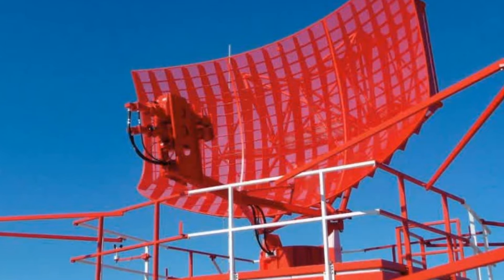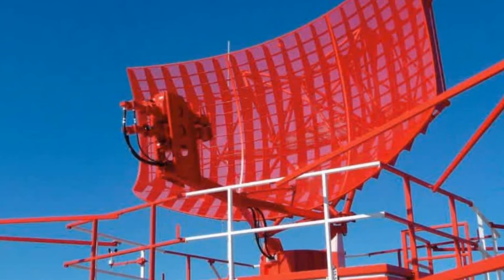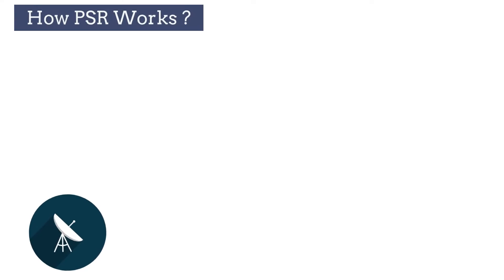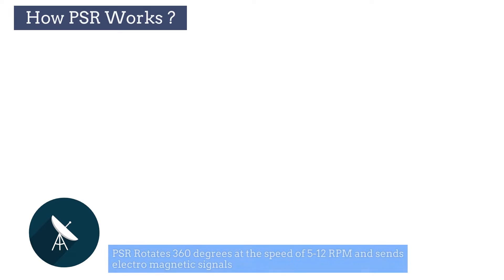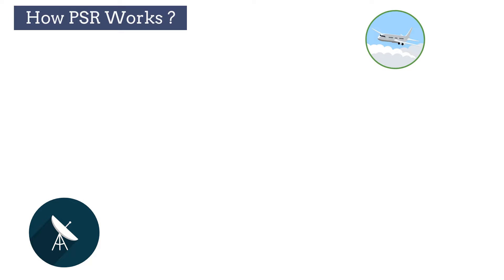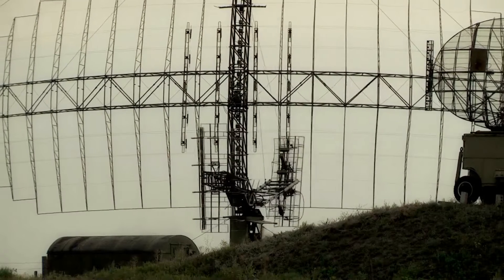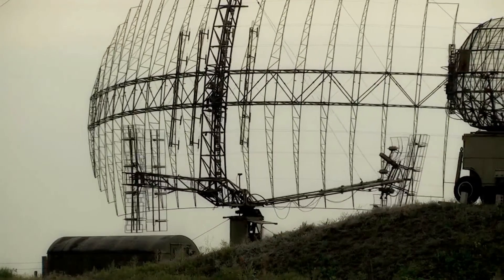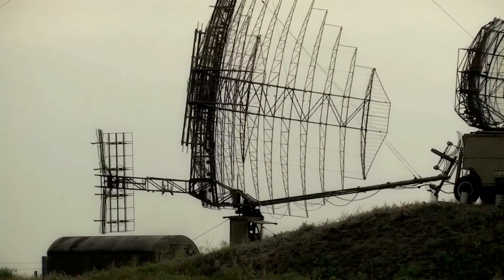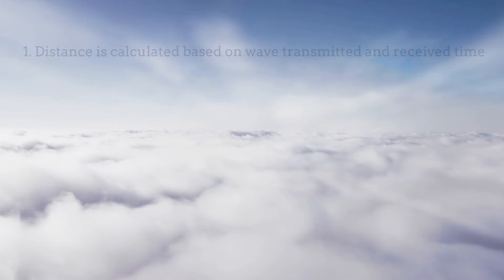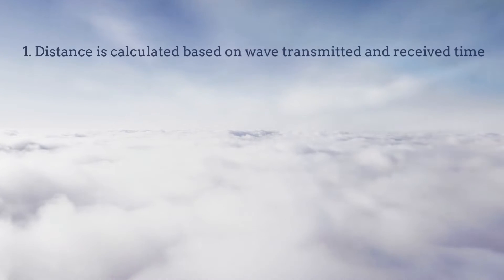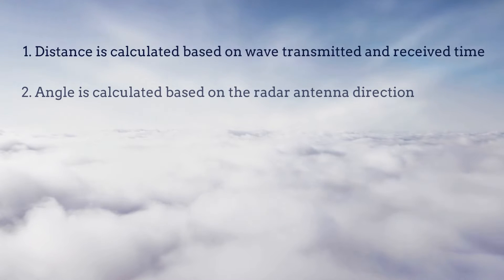Primary radars work based on the echolocation principle. These radars are placed in a slanting position and rotate 360 degrees at the speed of 5 to 12 revolutions per minute, sending electromagnetic signals. Upon reaching the aircraft or any other object, the signal is reflected and returned to the radar. The distance is calculated based on wave transmitted and received time, and the angle is calculated based on the radar antenna direction.